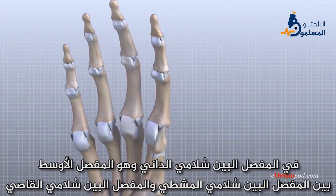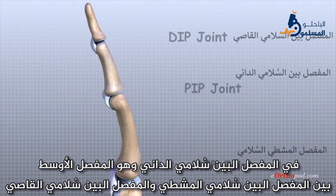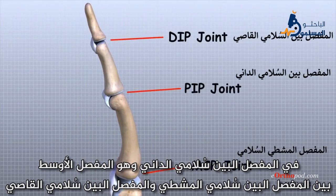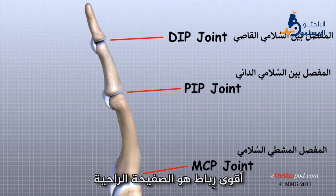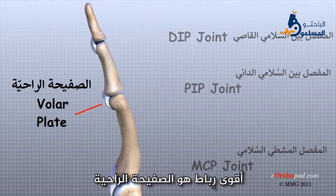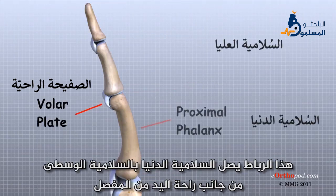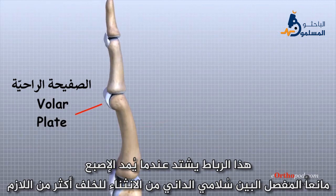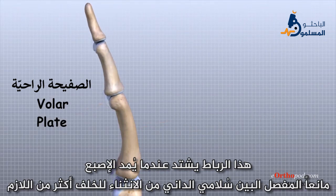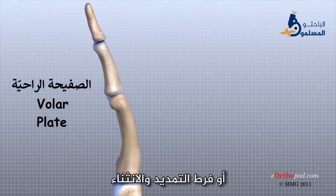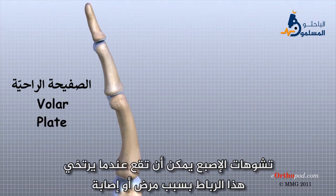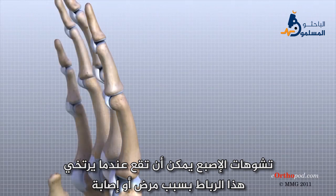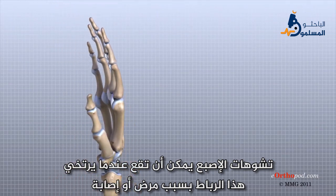In the PIP joint — the middle joint between the main knuckle and the DIP joint — the strongest ligament is the volar plate. This ligament connects the proximal phalanx to the middle phalanx on the palmar side of the joint. The ligament tightens as the joint is straightened and keeps the PIP joint from bending back too far, or hyperextending. Finger deformities can occur when the volar plate loosens from disease or injury.